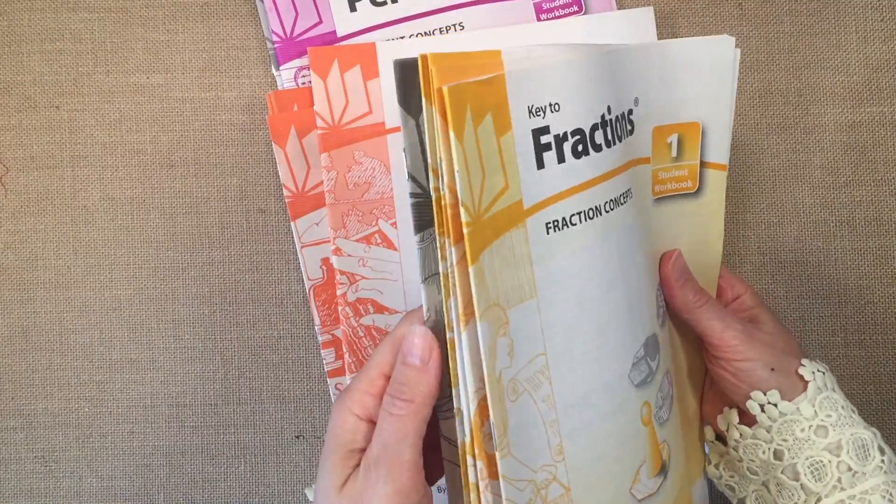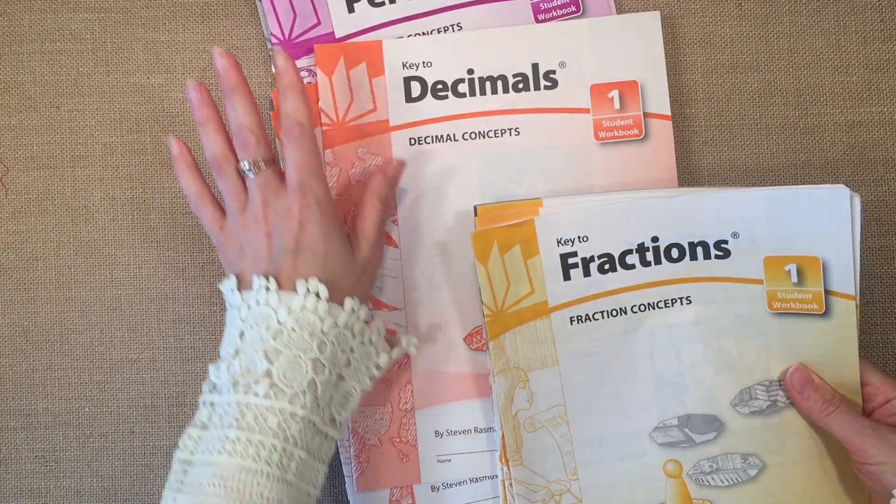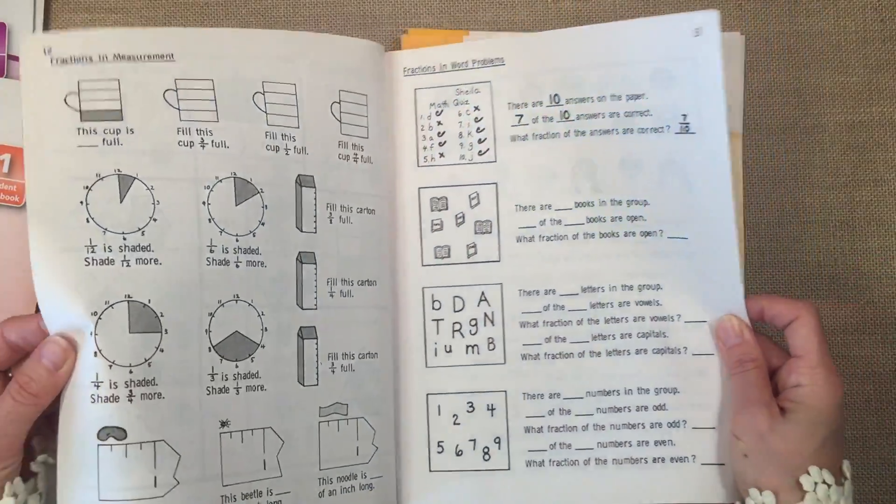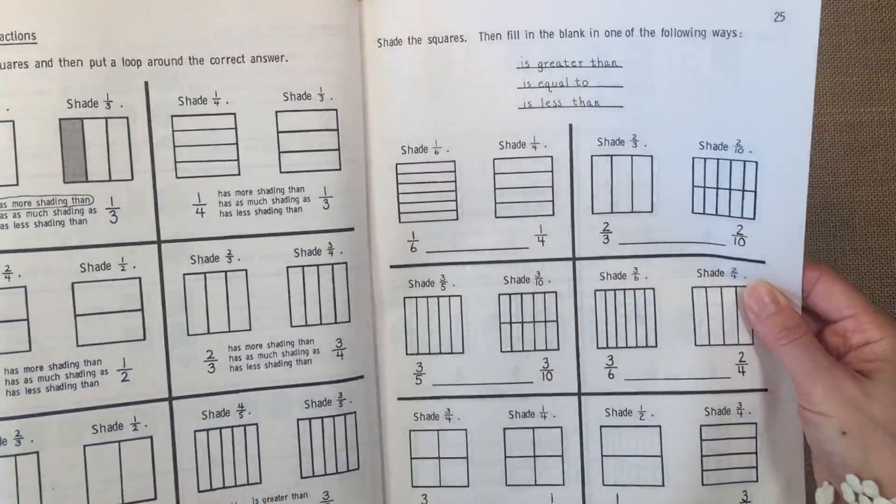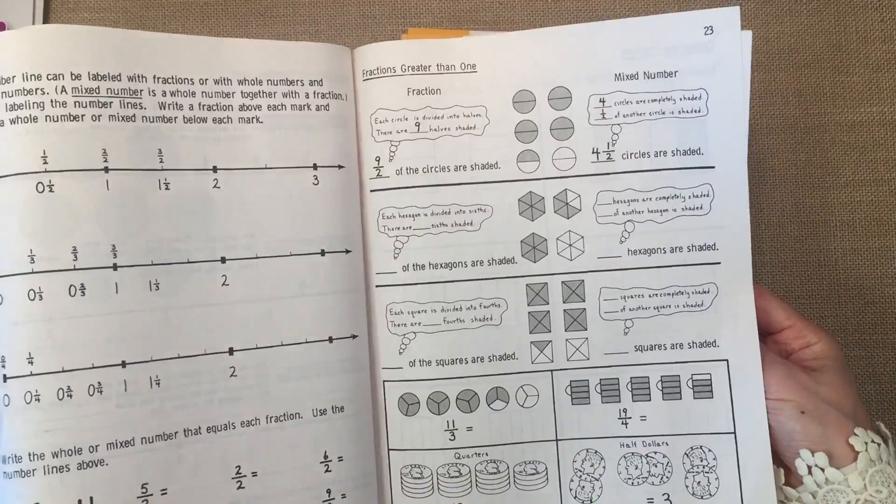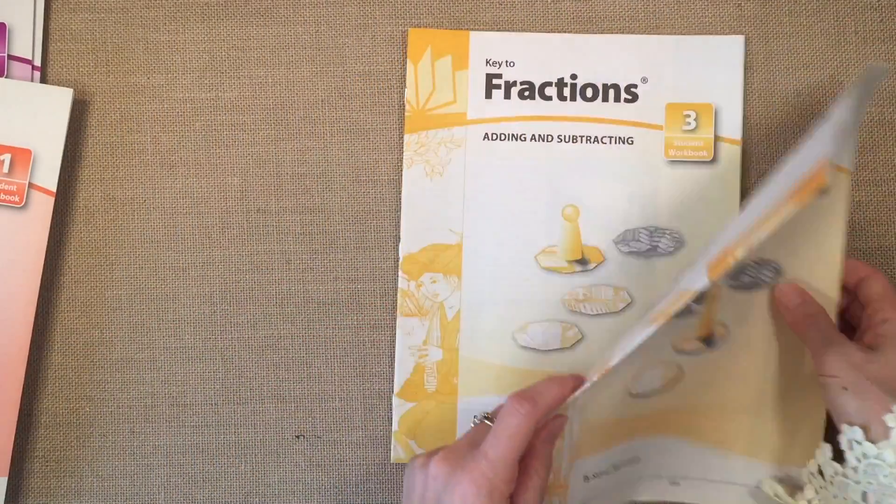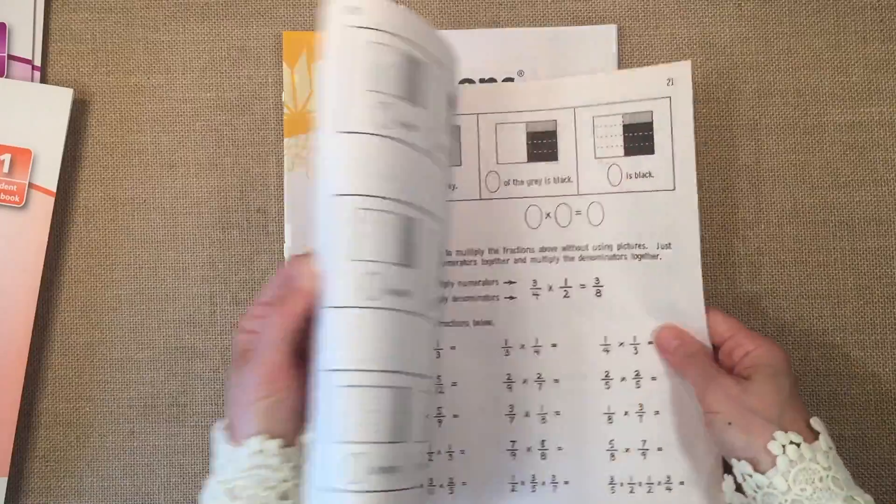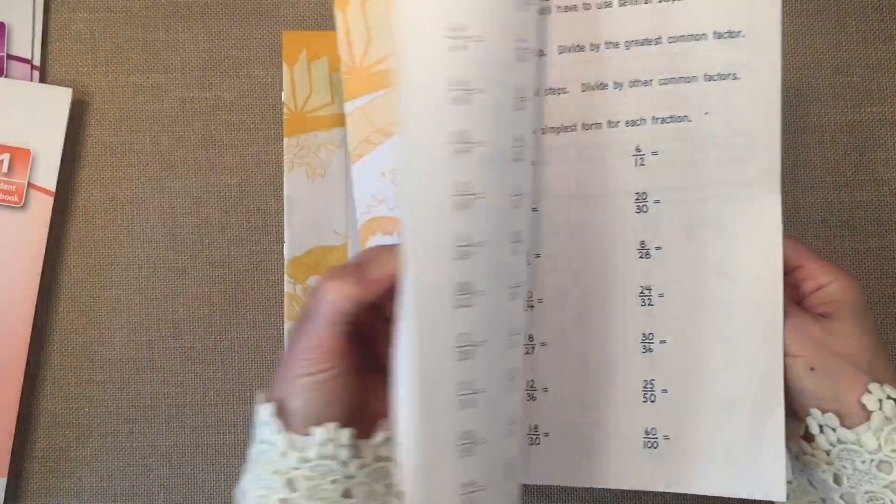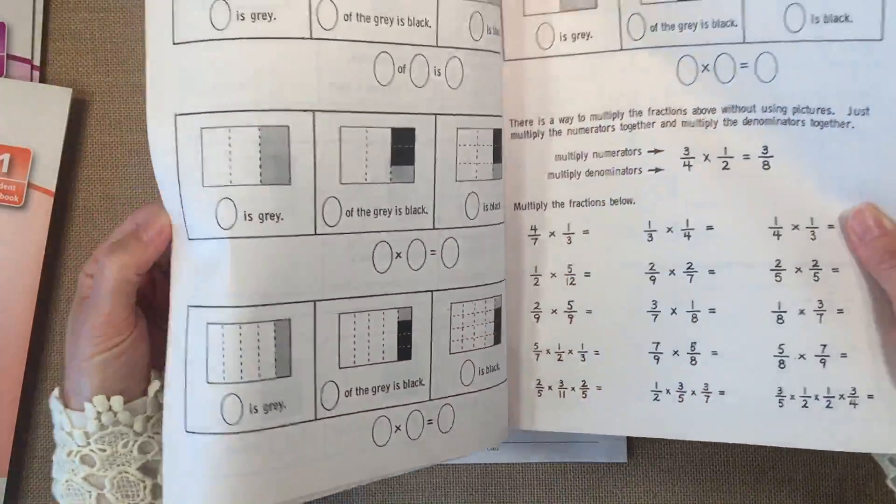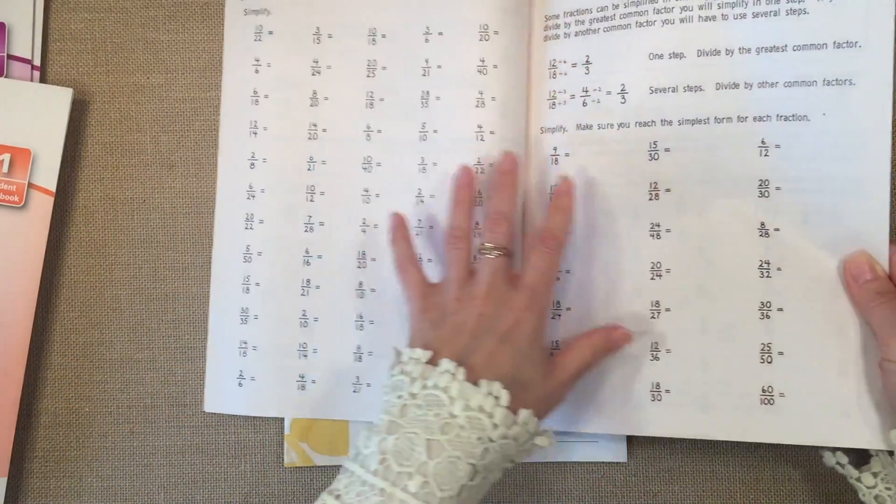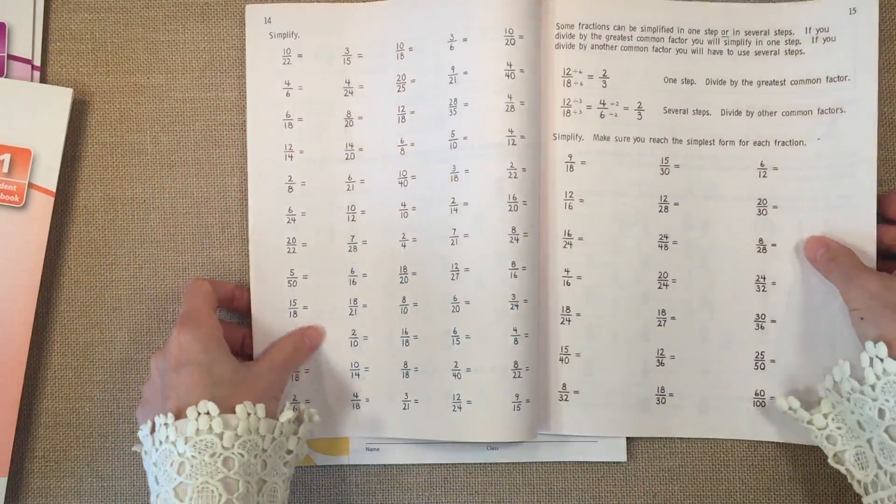For fractions, there are four books and there are also four books for decimals, but there are only three books for percents. So the first book goes by quite slow and steady with the whole concept of fractions. And then it gets into multiplying and dividing fractions. You can see there's a bit more space to work on questions, but not a whole lot of extra wasted space.